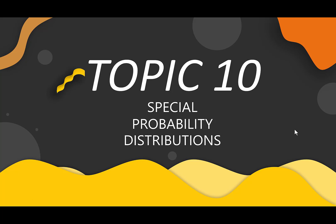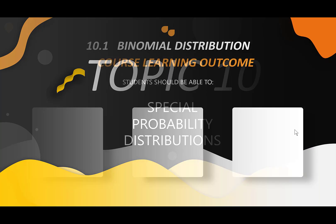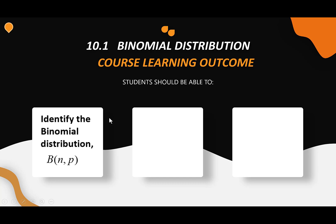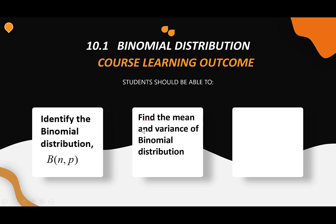In this video, we are going to learn Topic 10, Special Probability Distribution. In the first subtopic, 10.1, Binomial Distribution, the course learning outcome: students should be able to identify the binomial distribution, find the mean and variance of binomial distribution, and find the probability by using binomial distribution.